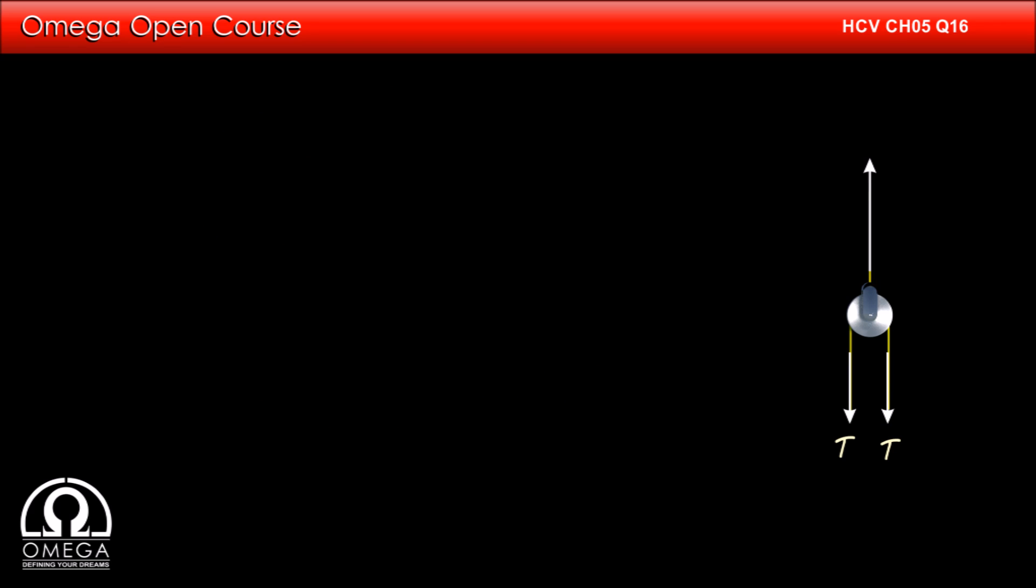Now let us look at the pulley. It is being pulled down from both sides by tension T in the string and pulled up by tension in the string connecting the pulley to the spring balance. Since the pulley is massless, net force on it is 0. Therefore the tension in the string joining pulley to the spring balance is 2T that is 22g by 5. The spring balance reads the tension in the string pulling it. So the reading in the spring balance is 22 by 5 kg that is 4.4 kg. This is our answer.